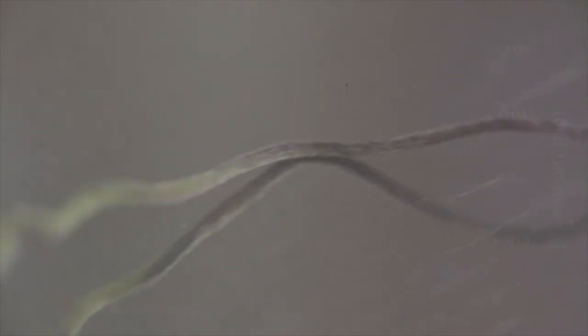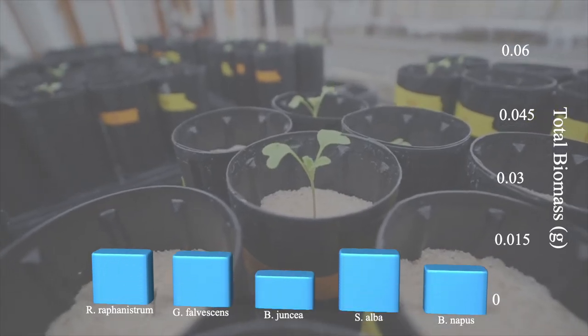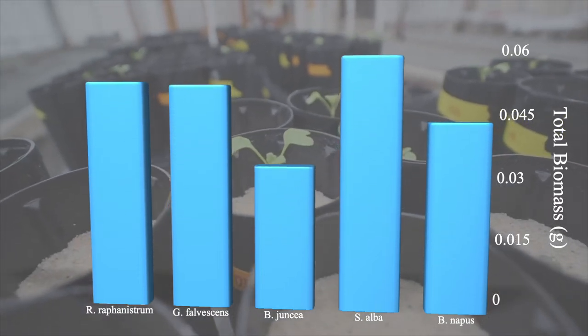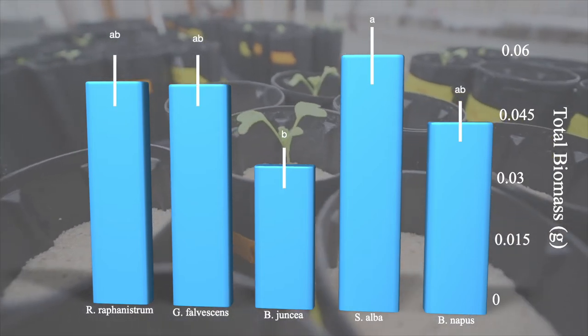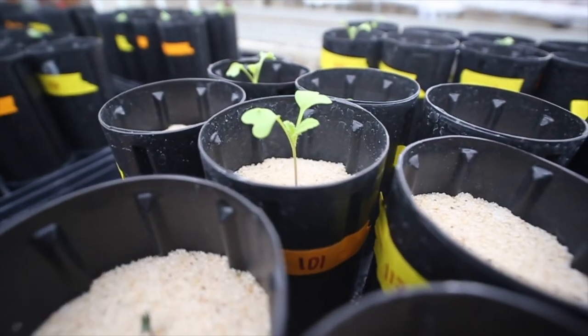And now, let's look at the results of the study. When you look at total biomass on a species level, you see that the only significant difference is between two surrogates, Brassica juncea and Sinapis alba, while wild radish is not statistically different from the surrogates. So this would support the hypothesis that surrogates are a viable substitute for wild radish.